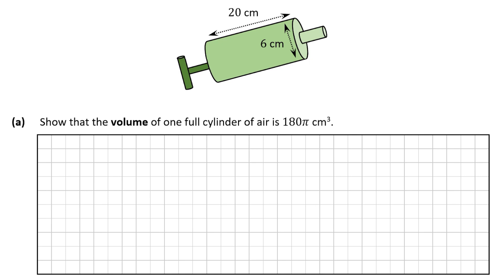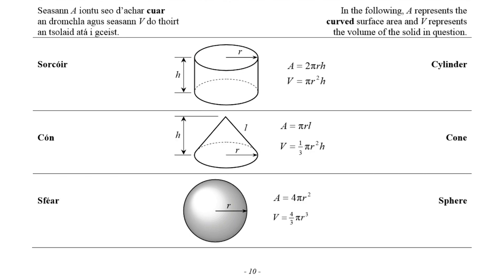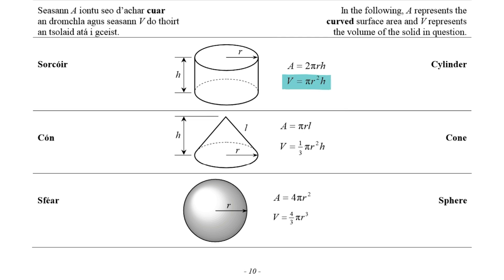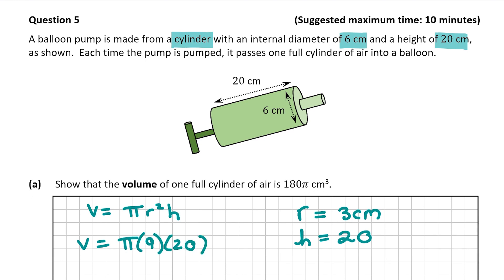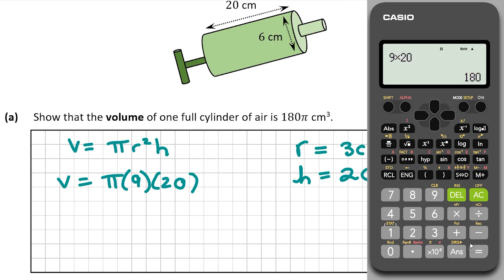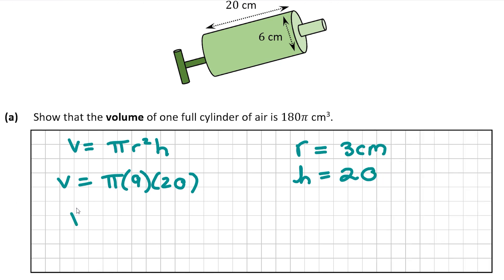We're going to use the equation for the volume of a cylinder, which we can find in the log tables. On page 10, the formula is V = πr²h. The radius is half the diameter, so r = 3 centimeters, and the height is 20 centimeters. So the volume equals π × 3² × 20, which is π × 9 × 20 = 180. Therefore the volume is equal to 180π centimeters cubed.